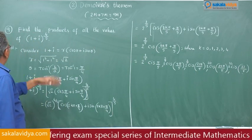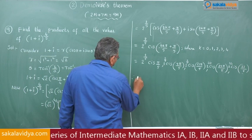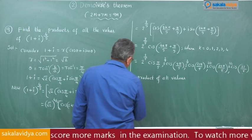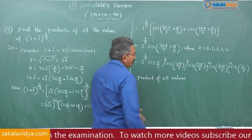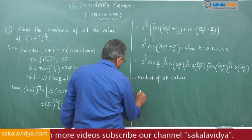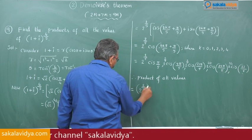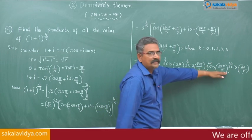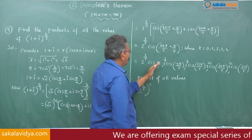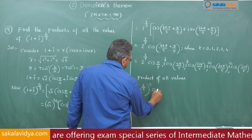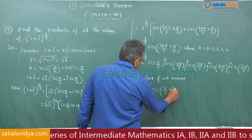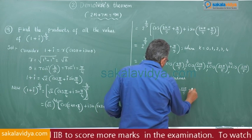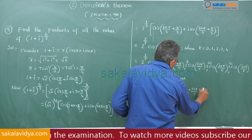Now, what we have to find is the product of all values. The product equals (2 to the power of 2 by 5) to the power of 5, times cis(θ₁) · cis(θ₂) · cis(θ₃) · cis(θ₄) · cis(θ₅), which equals 2 to the power of 2, times cis of half the sum of all angles: π/5 + 9π/5 + 17π/5 + 25π/5 + 33π/5.